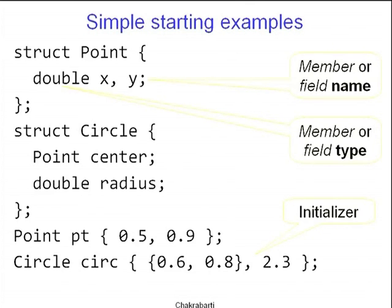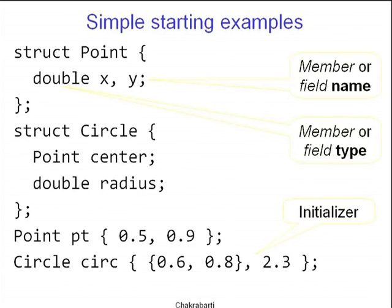We looked at simple starting examples. You could define a struct called point which has an x coordinate and a y coordinate. These are called members. Double is the member type or field type, and x and y are the member or field names. Similarly, you can define struct circle which uses the definition of point, and circle also has a radius. We saw how you can initialize these variables with these types. If you want to define a variable called pt of type point, pt is initialized with a list enclosed in curly brackets. In this case, 0.5 will go to x and 0.9 will be assigned to y.